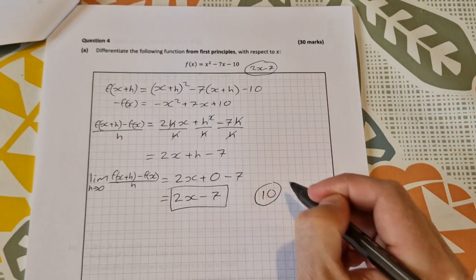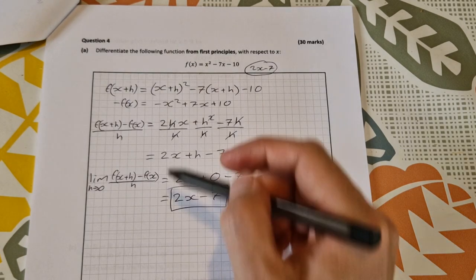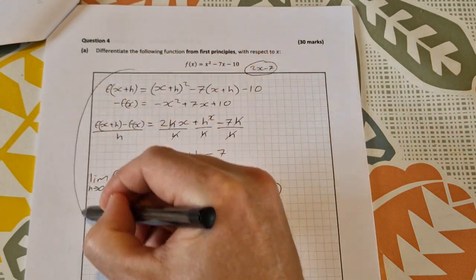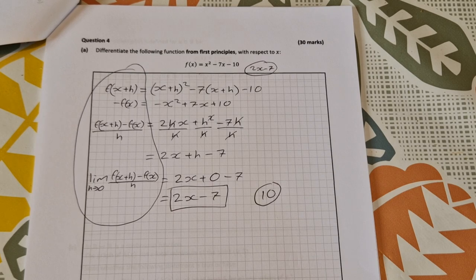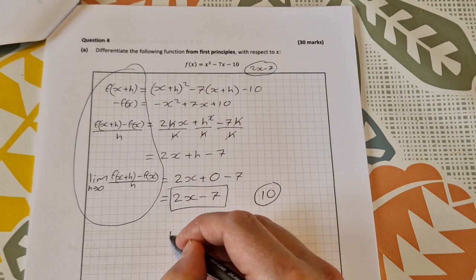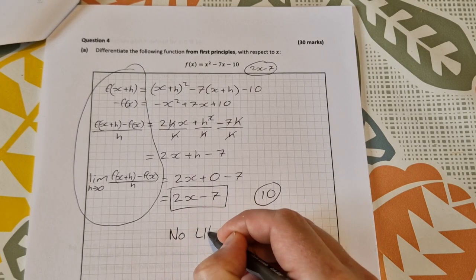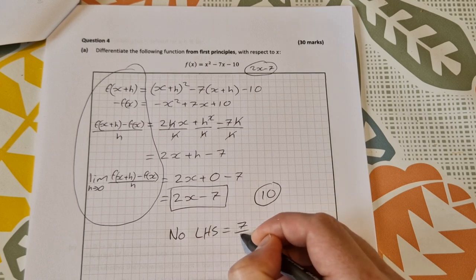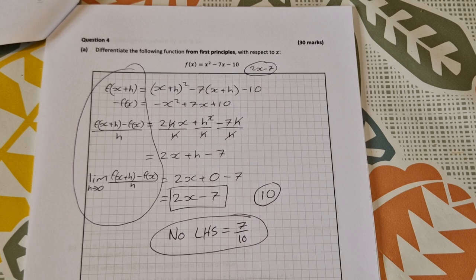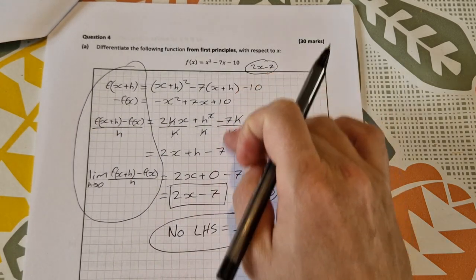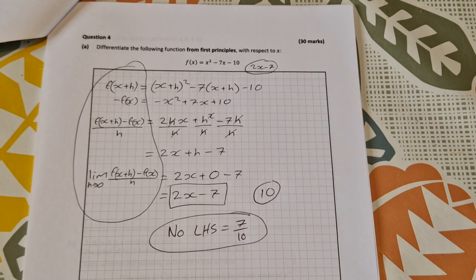This always comes up in class: if you don't have the left-hand side written in, you only get 7 marks. No left-hand side equals 7 out of 10. That is coming directly from the marking scheme. If you don't write that in and you do everything right, you're only getting 7 out of 10.